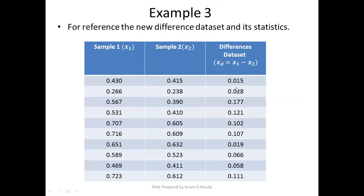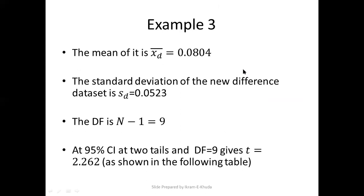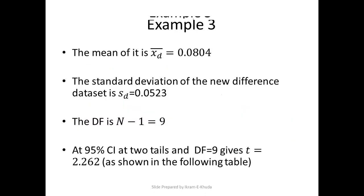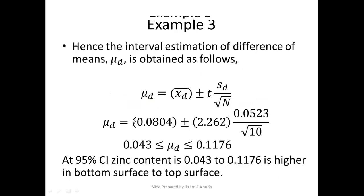We first create the differences data set xd, which is x1 minus x2 point by point. From this differences data set we find the mean xd bar equals 0.0804 and standard deviation sd equals 0.0523. The df is n minus 1, which is 10 minus 1 equals 9. Looking at the two-tail part at 0.05 significance level with df of 9, the t value is 2.262. Plugging this into the estimation equation, we get the interval of 0.043 to 0.1176, meaning the zinc content at the 95% confidence interval is 0.043 to 0.1176 higher in the bottom surface compared to the top surface.